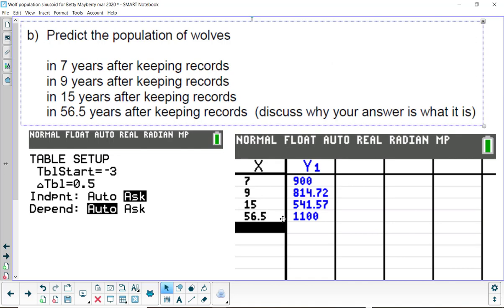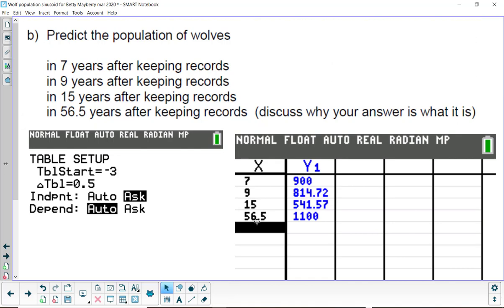By the way, it says 56 and a half years. Why is this answer 1100? Why is it a max? Well, 5.4 is the period. Times 10 is 54 years. That's a period. Plus the two and a half where we started at 1100 gets you 56.5.